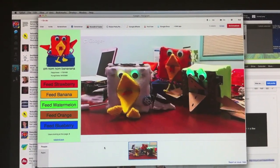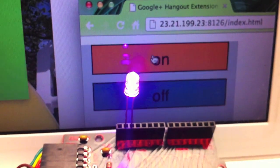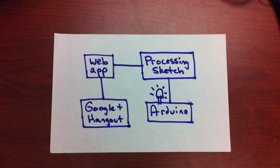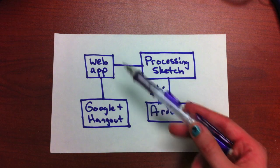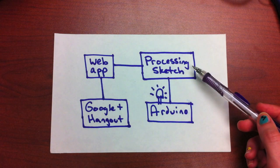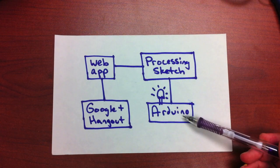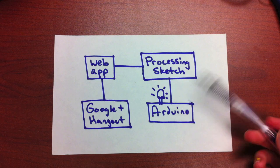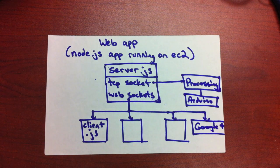Today I'll show you how it's made and how we can make a simple version of this to just turn on and off an LED. The overview of how this works is that there are four main components: the web app, which is running basically everything; the Google Plus Hangout, which is displaying the web app; a Processing sketch, which is communicating back and forth with the web app; and the Arduino. For the web app, it's basically just a Node.js app running on an EC2 instance.